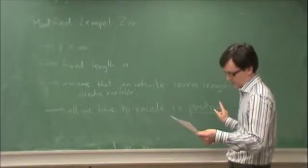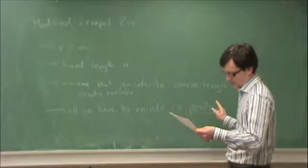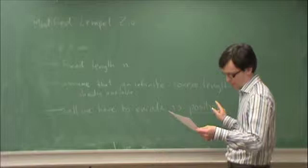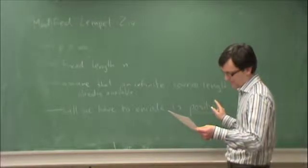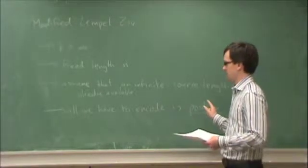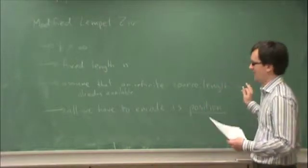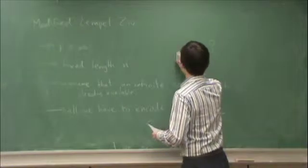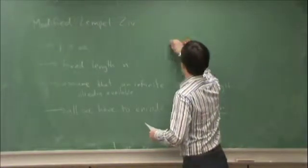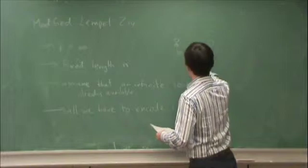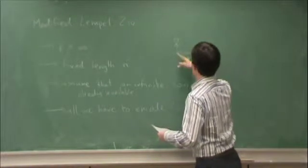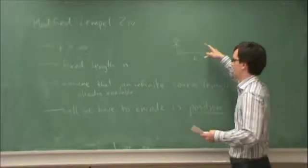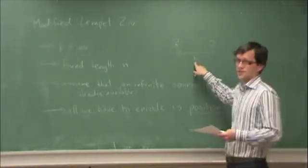And, in fact, what we are going to encode is the position with respect to the current. In other words, if this is now, we're going to encode the position with respect to now. So, in other words, if I have to look k bits into the past to find the beginning of this sequence, then I'm going to encode this as k.